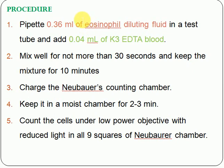You also need micro pipettes, glass tubes, and normal pipettes. For the procedure: first, pipette 0.36 ml of eosinophil diluting fluid into a test tube, then add 0.04 ml of K3 EDTA blood and mix — but do not mix for more than 40 seconds. Keep the mixture for 10 minutes. After 10 minutes, charge the Neubauer chamber.